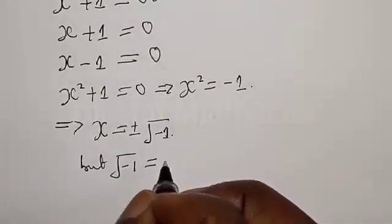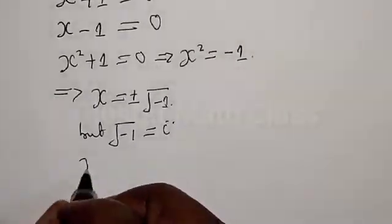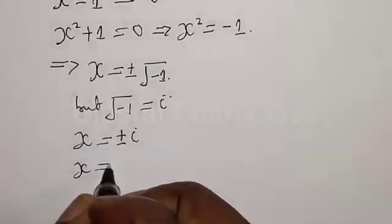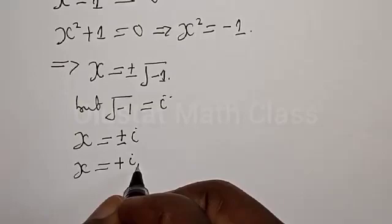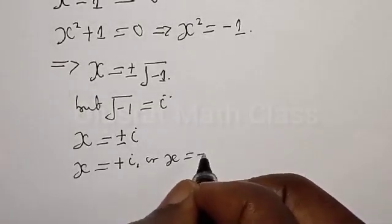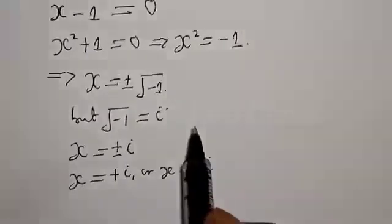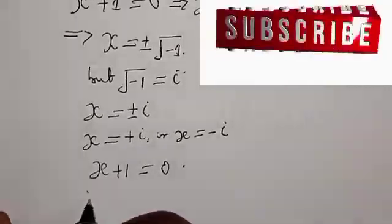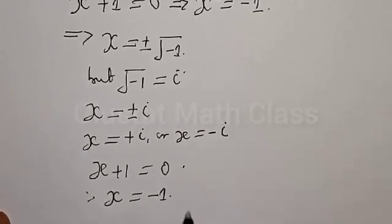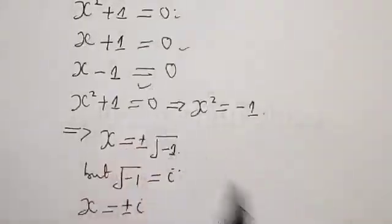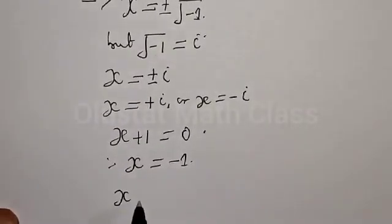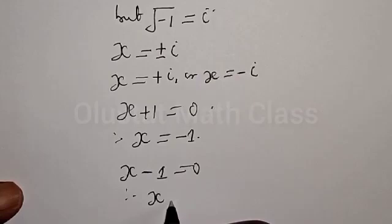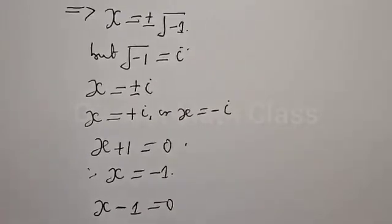Since the square root of minus 1 is equal to i, therefore s is equal to plus or minus i, meaning s equals plus i or s equals minus i. From s plus 1 equal to 0, we get s is equal to minus 1. And for the last factor, s minus 1 is equal to 0, therefore s is equal to 1. So the roots of the equation are s = i, s = -i, s = -1, and s = 1.